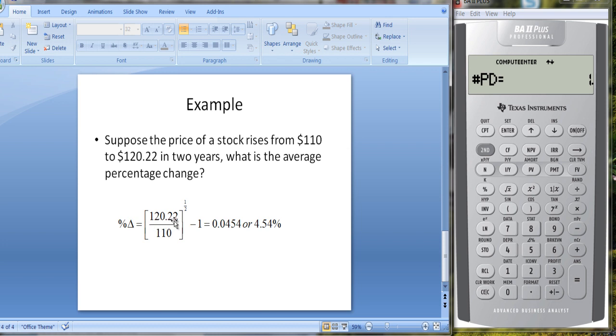$120.22. The price in year zero is $110. We're going to raise it to the one-half power, take the square root of it, and subtract one. So $120.22 divided by $110 equals—I'm going to take the square root of that and subtract one, and I get